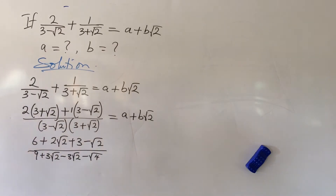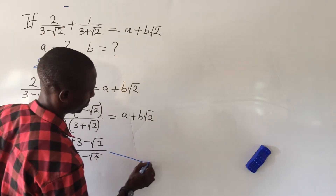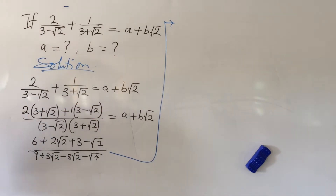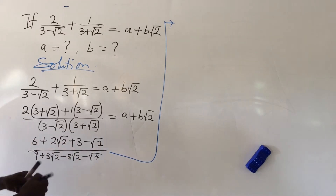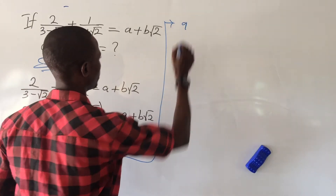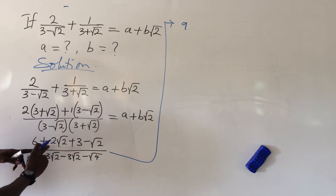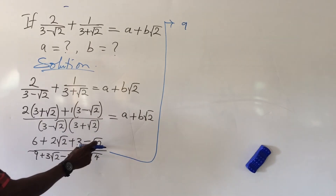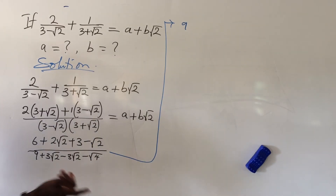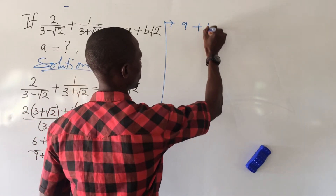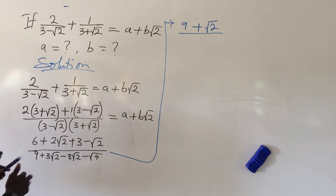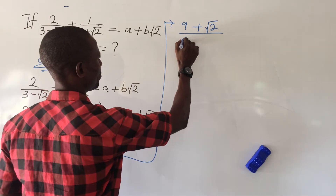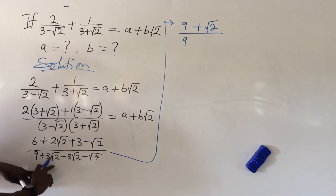Proceeding from here: in the numerator, 6 and 3 come together to give us 9. Then we have plus 2 root 2 minus 1 root 2 — since there's an invisible 1 — so that gives us plus root 2. In the denominator, we bring down 9 first, then plus 3 root 2 minus 3 root 2.